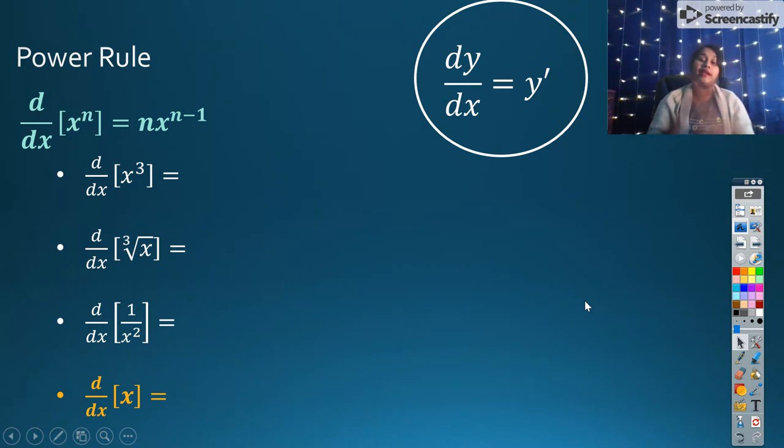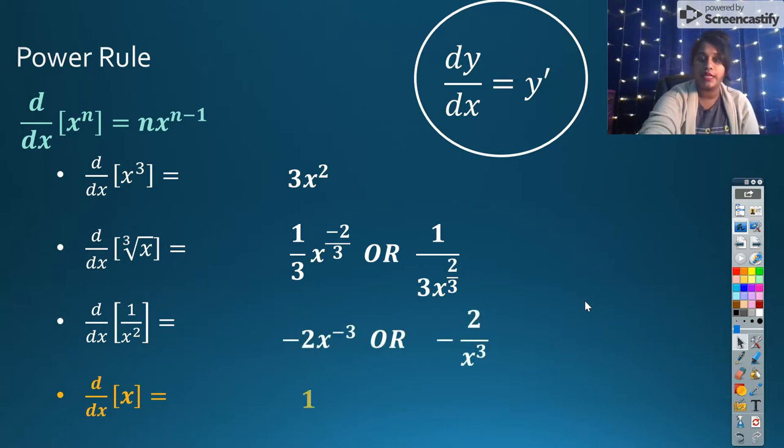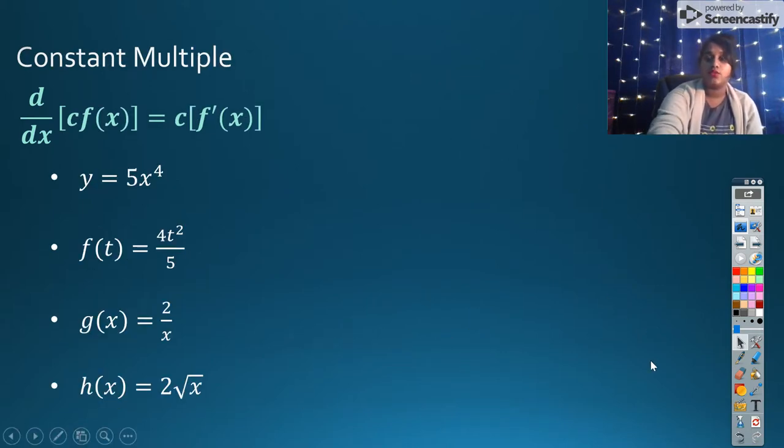Before we move on and I verify our answers, I want to recall some notation. dy dx is the same as saying y prime. So I'm showing you all the different ways we can write the derivative. d dx, dy dx, y prime, f prime. There's so many different ways. So here's proof of our answers.